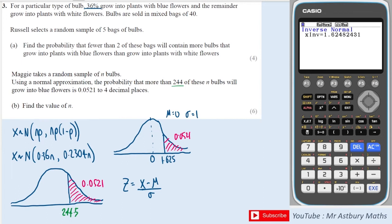So we can write that 1.625 is our z value, our x value is 244.5 minus mu which is 0.36n, all over the standard deviation which is the square root of the variance, so the square root of 0.2304n.